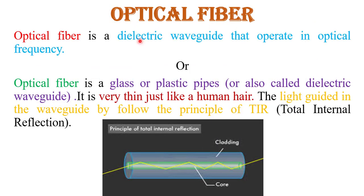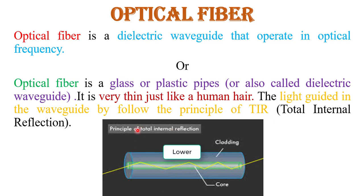Optical fiber is basically a dielectric waveguide that operates at optical frequencies. It is called a dielectric waveguide because optical fiber is a hollow pipe made up of glass or plastic. Air inside the pipe acts like a dielectric, which is why it is called a dielectric waveguide. Optical fiber is very thin, just like a human hair. Light is guided through the waveguide by following the principle of total internal reflection. This diagram shows optical fiber through which light follows the principle of total internal reflection and is guided through the waveguide.